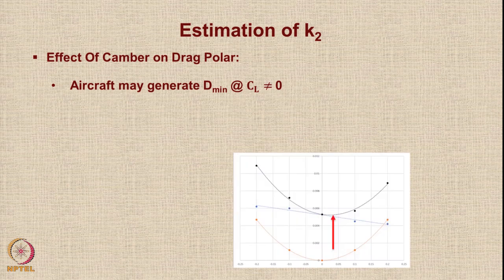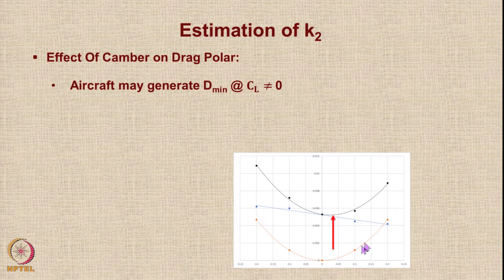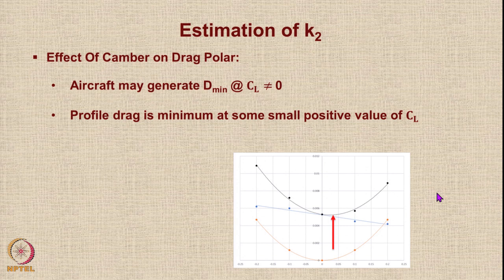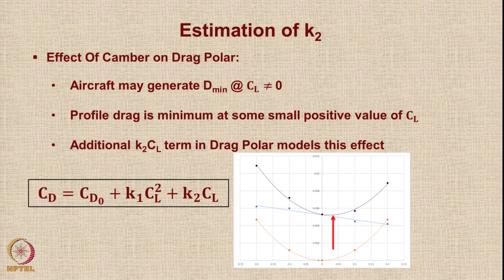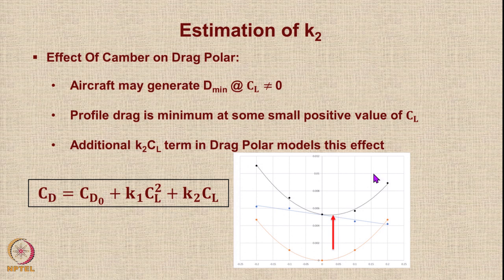Here is an example of an airfoil with a non-parabolic drag polar — the top blue line. It has two components: a parabolic component modeled by K1 and a non-parabolic component. For such aircraft, the profile drag is minimum at some small positive value of CL. The additional K2·CL term models this effect. Without this term we would get a parabolic drag polar. We will see today how to get the equivalent parabolic drag polar for an aircraft.